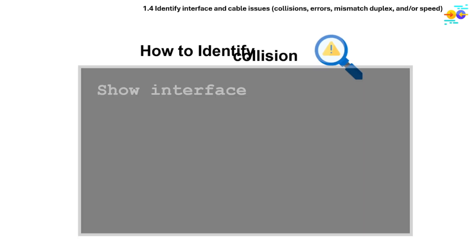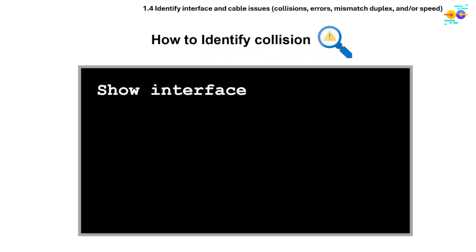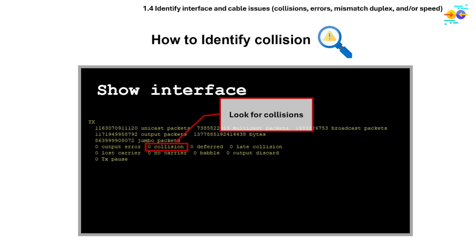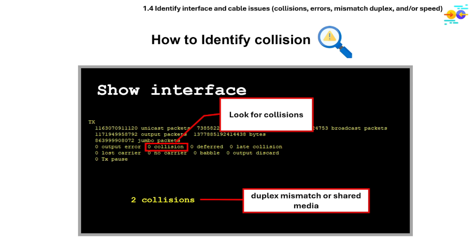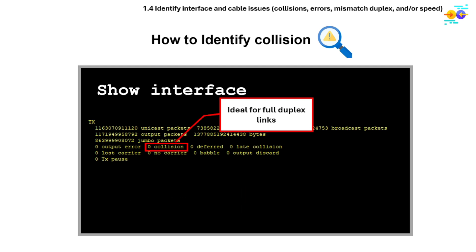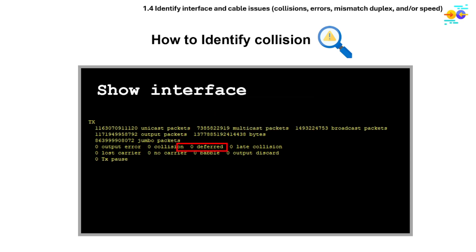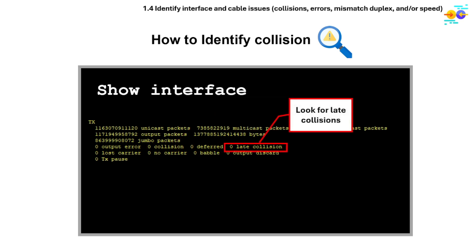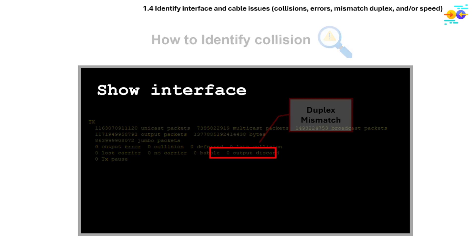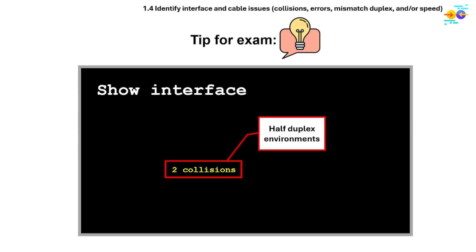To identify collisions, use the show interface command on a switch or router and look for the collisions counter. A high value indicates a possible duplex mismatch or shared media issue. Collisions should always be zero on full-duplex links. You can also look for late collisions, which happen after the first 64 bytes of a frame — this usually indicates a duplex mismatch.